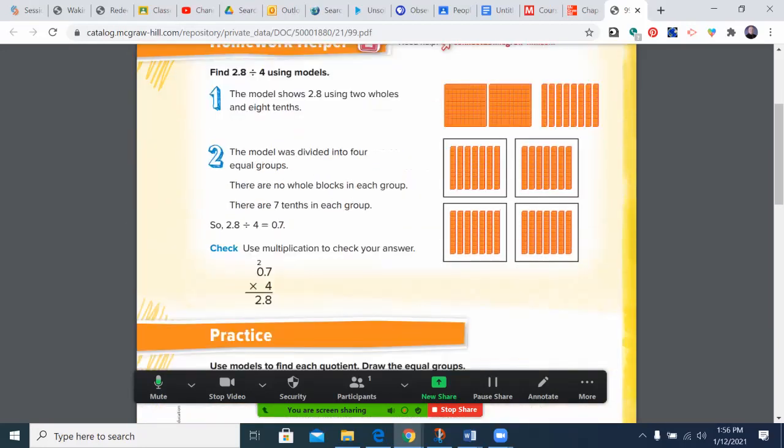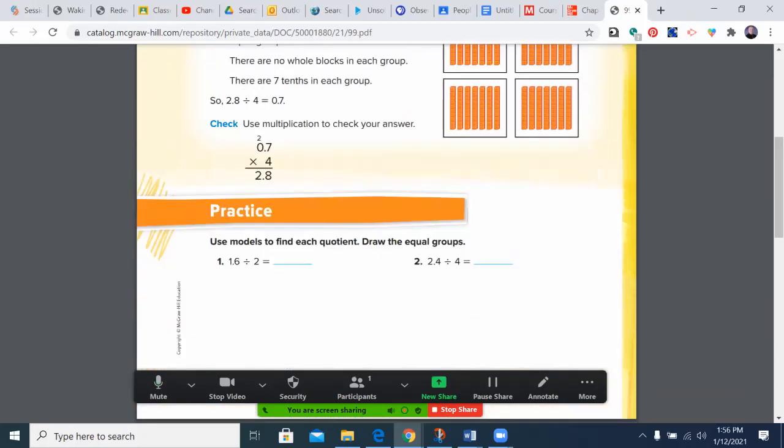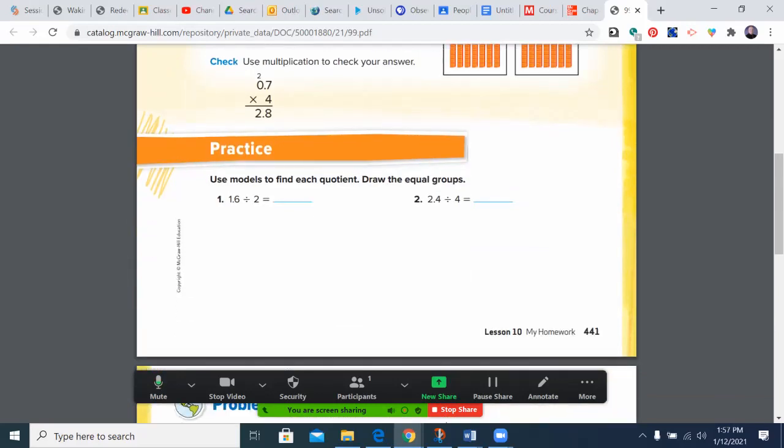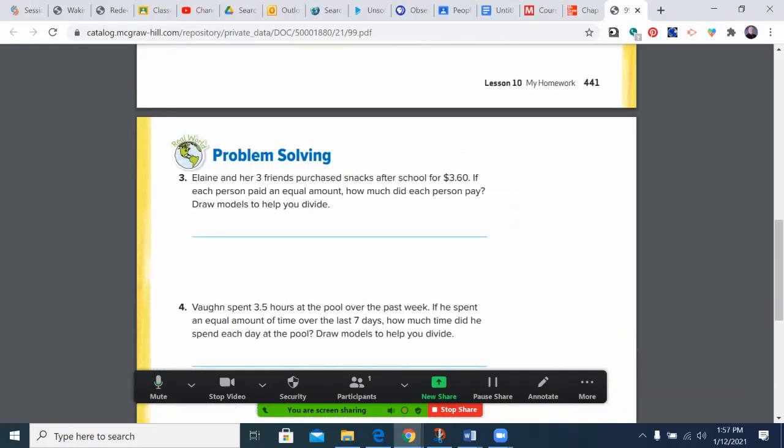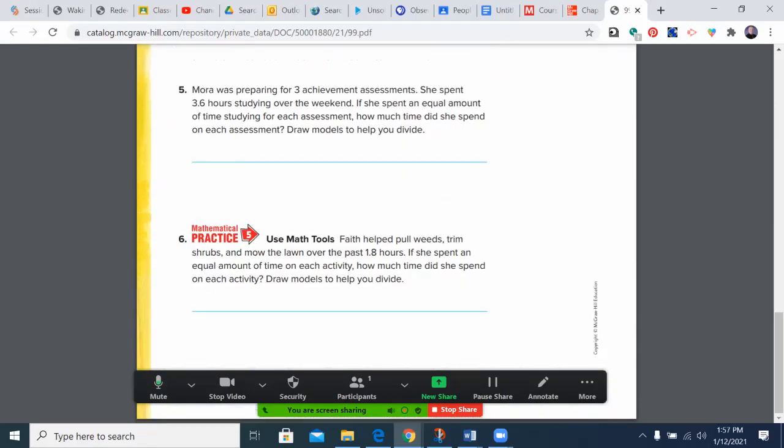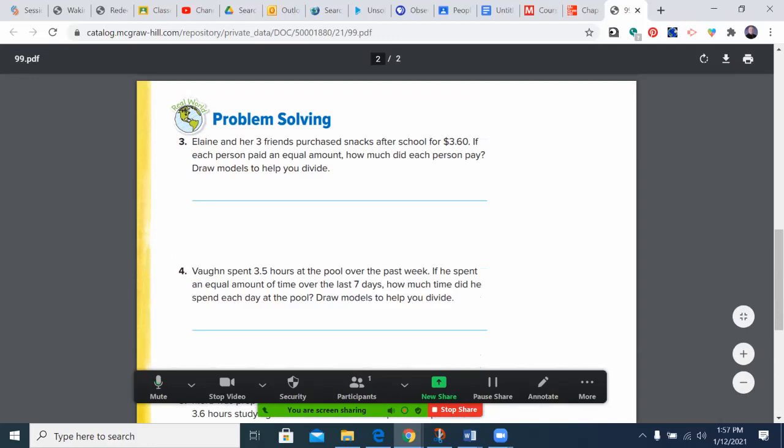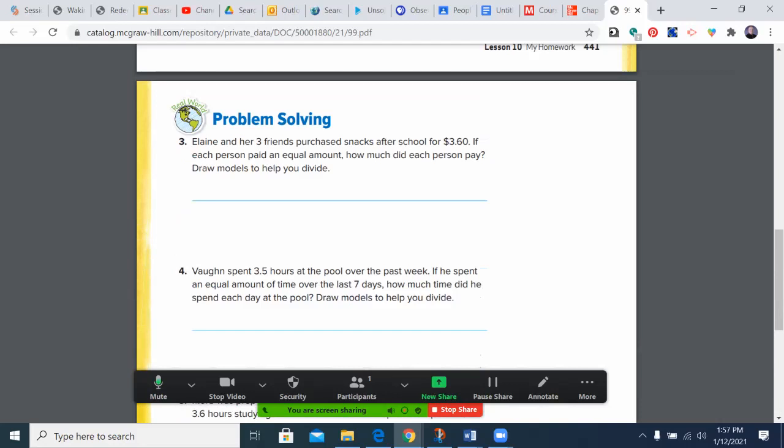So, as you look at the assignment, always look on the homework helper. It's a good, quick reminder before you get started. These two, use the models to find each quotient. Draw the groups. And yes, you should draw the groups. Three here, draw models. And you can put the models right along there. Four says draw models. Five, draw models. Six, draw models. So, you really should have models all over the place here. Whether you put it off to the side or right under, that's going to be kind of a you decision. But it's necessary because that's really what we're building off of.